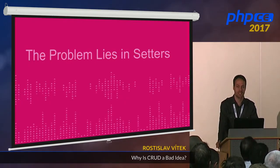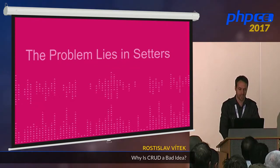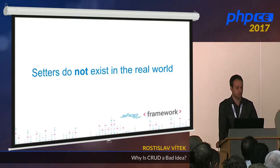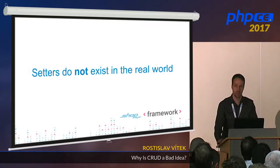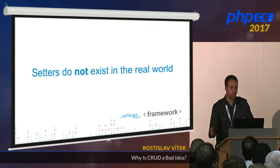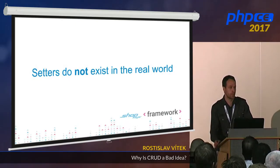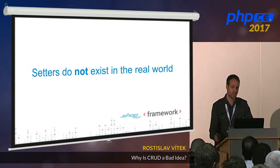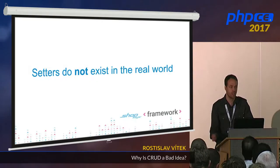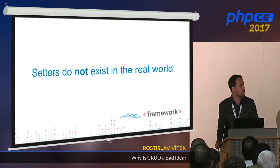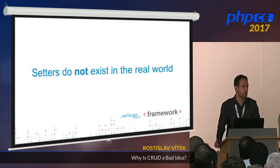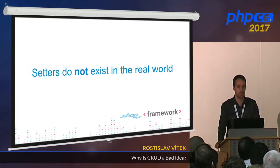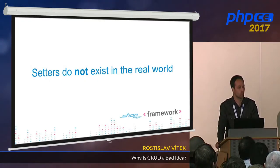So it seems that the problem lies in setters, because there is no such thing as a setter in real life. There is always a better, more expressive way of naming your methods. It is really good to think about naming conventions to reflect real-world behaviour. For example, when a writer finishes their article, they don't 'set the state to published' — they simply publish it. In the same way, when a customer makes an order, they don't 'set status to paid' — they simply pay it. These are the names you should probably use to be more descriptive and make the code more readable.